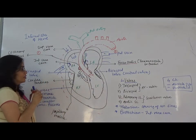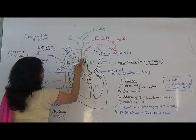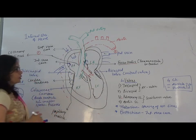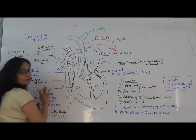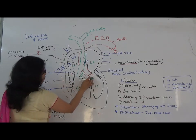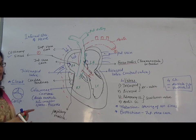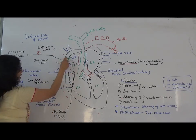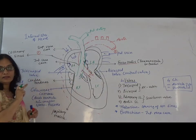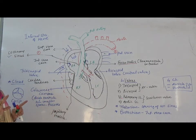From the aorta, blood goes into systemic circulation supplying all organs with oxygenated blood. The deoxygenated blood then returns to the heart through the superior and inferior vena cava and goes for oxygenation via the pulmonary artery — this is called pulmonary circulation. Because blood passes through the heart twice, human circulation is called double circulation.